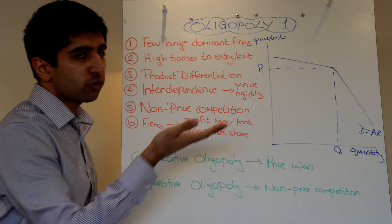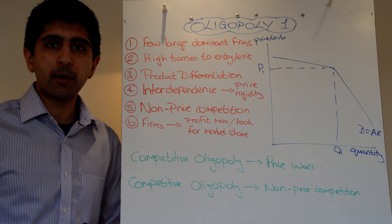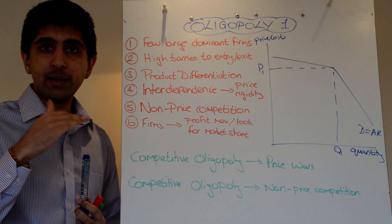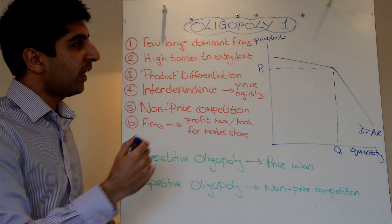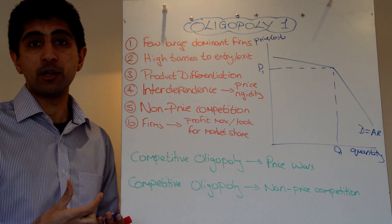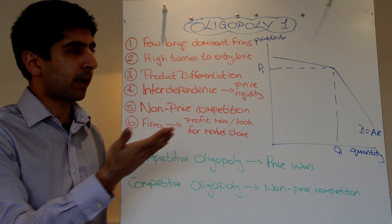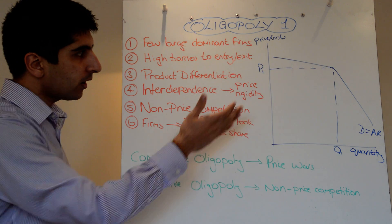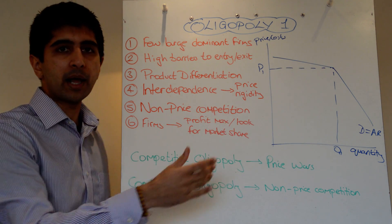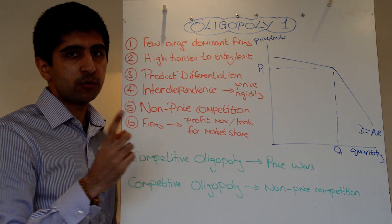The point being made is that it doesn't make sense for firms to move away from price P1 — it makes sense to keep prices rigid at P1. Because if the firm tried to raise its price, what are the other firms in the market going to do? The rivals are not going to follow — they're going to keep their price lower. Therefore, this firm is going to lose a massive amount of market share and profit, shown by a very elastic demand curve above P1. Consumers will simply leave and consume elsewhere where prices are lower.